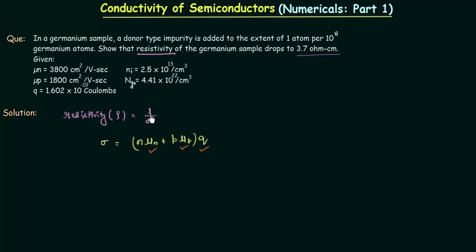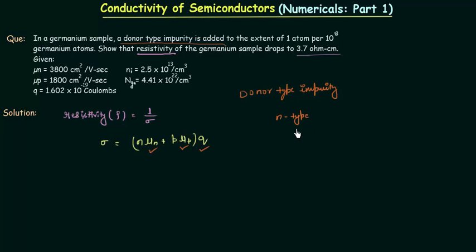A very important piece of information given in the problem is that a donor type impurity is added. What do we mean by donor type impurity? The donor type impurity is nothing but the pentavalent impurity. By adding the pentavalent impurity, you have an excess of electrons, making it an n-type semiconductor. In case of n-type semiconductor, we have N_d, the donor ion concentration, which we need to find from the given information.